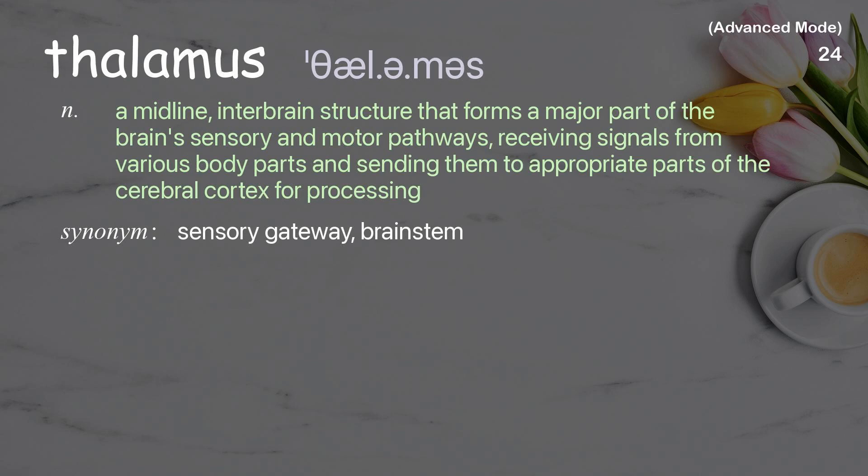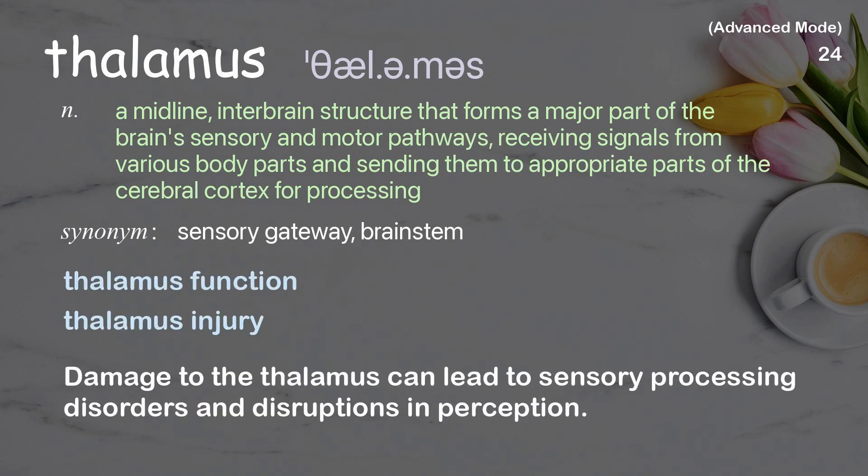Thalamus: a midline interbrain structure that forms a major part of the brain's sensory and motor pathways, receiving signals from various body parts and sending them to appropriate parts of the cerebral cortex for processing. Examples: thalamus function, thalamus injury. Damage to the thalamus can lead to sensory processing disorders and disruptions in perception.